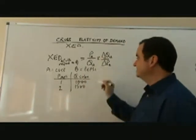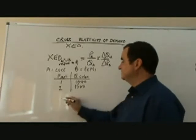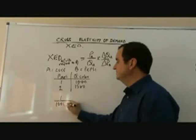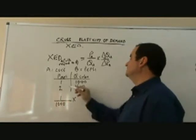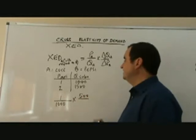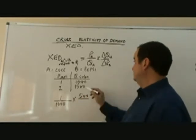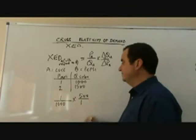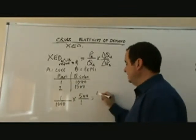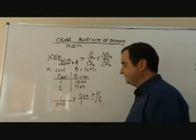Okay, let's work with that. Let's put that into our equation. And we have the price of B, the price of Pepsi, was originally one and the quantity of Coke being bought was originally a thousand times change in quantity, five hundred, divided by change in the price, which is one. It went up by one. And if you work that out, it's five hundred over a thousand. It comes out to a half. And it's plus a half.